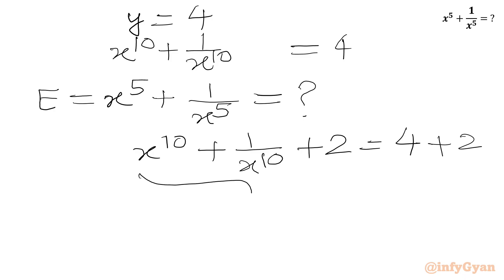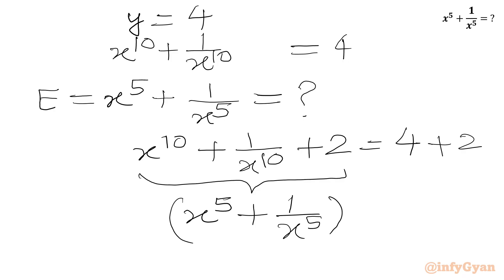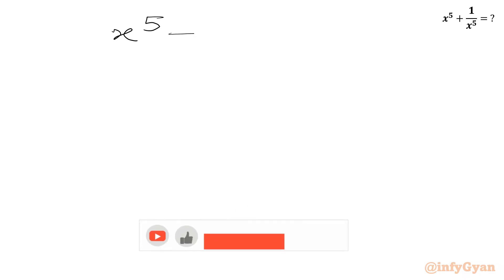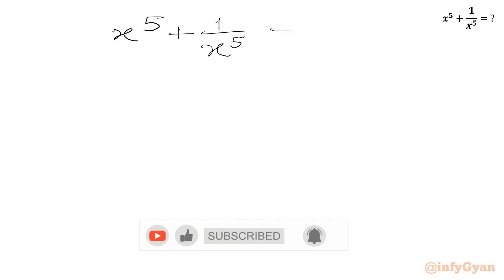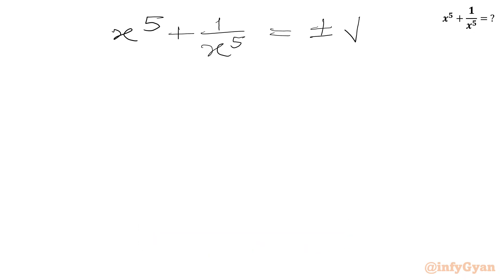From the LHS we can write this as a perfect square of x power 5 plus 1 over x power 5. We can verify: x power 5 whole square is x power 10, 1 over x power 5 whole square is 1 over x power 10, and 2 times x power 5 times 1 over x power 5 is 2. In the RHS we have 6. Taking the square root of both sides, we get x power 5 plus 1 over x power 5 equal to plus or minus square root 6.